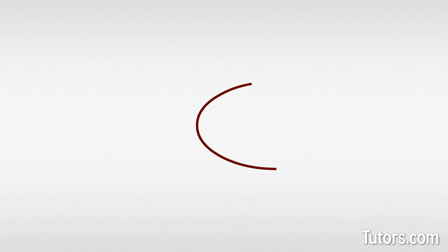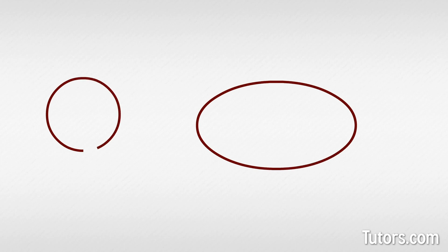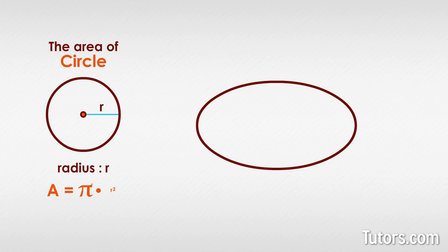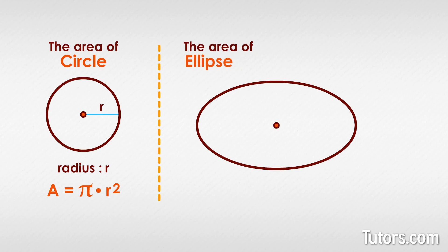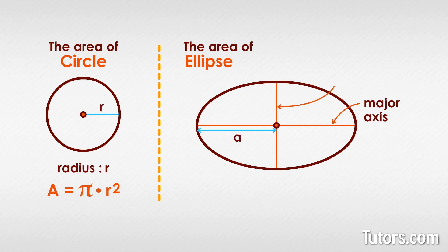Some two-dimensional shapes are not even polygons, like our ellipse or a circle. The area of a circle with radius r is found using the formula: a equals pi times r squared. An ellipse's area is found using its two axes — the major axis, length from the center, usually designated as a, and the minor axis, width from the center, usually designated as b — with the formula: a equals pi times a times b.